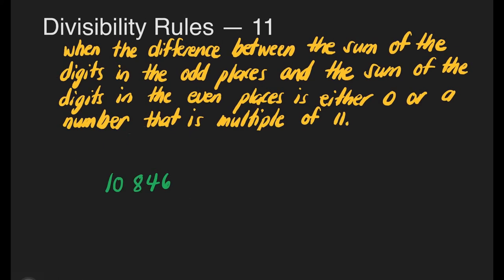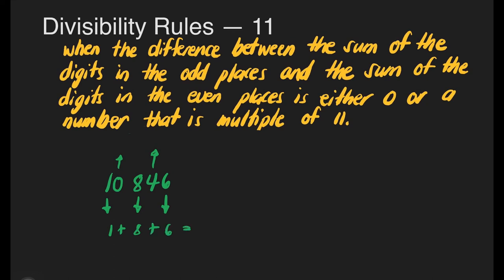Let's have the third number, 10,846. This is in odd place, even place, odd place, even place, and odd place. 1 plus 8 plus 6: 1 plus 8 is 9, plus 6 is 15. Next, 0 plus 4 is equal to 4. All we need to do is to get the difference of 15 and 4. 15 minus 4 is equal to 11. It means this number is divisible by 11, because 11 is a multiple of 11.